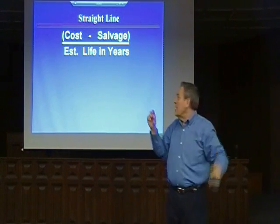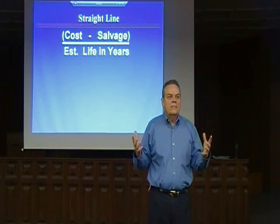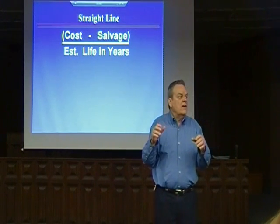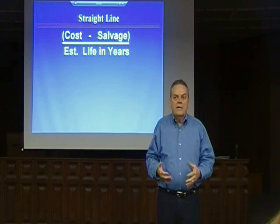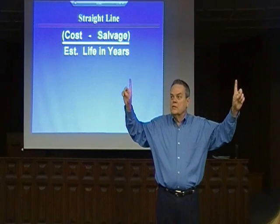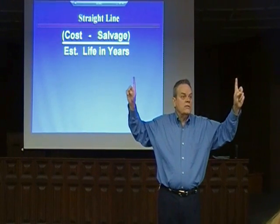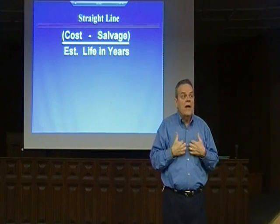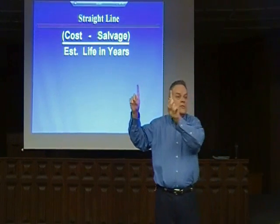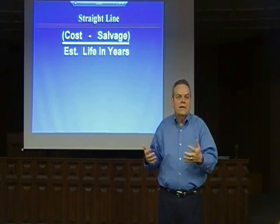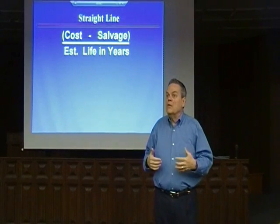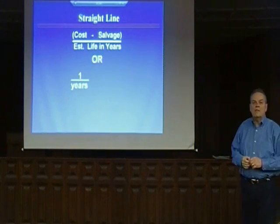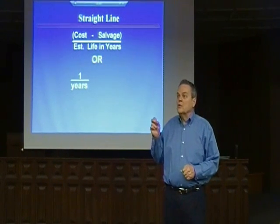I'd like to say cost minus salvage divided by life — where life is defined in years for straight line: 5 years, 8 years, 40 years, 10 years, based on the manufacturer's suggestion, our experience, or our intent. Cars might be 3 years; trucks might be 8 years; buildings might be 40 years, depending on how long we intend to use those assets. Cost minus salvage divided by life gives you the annual depreciation under straight line.